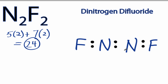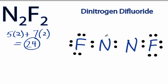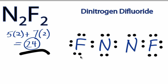We've used 6 so far. Let's go around the outside: 6, 8, 10, 18, then to the central atoms: 20, 22, 24, and we've used all 24 valence electrons.